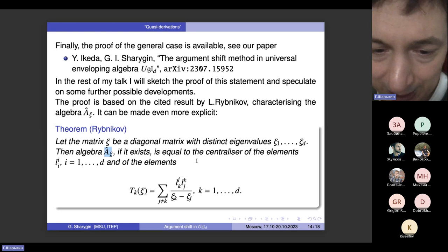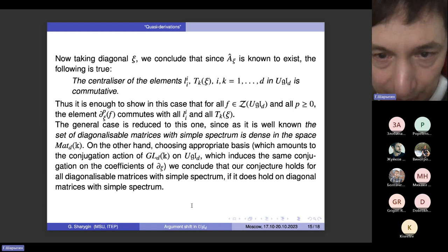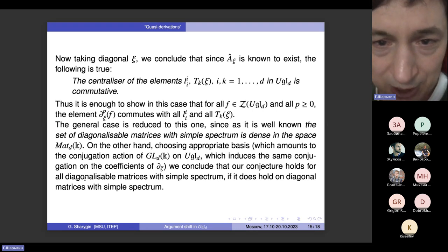The proof is based on the following theorem by Rybnikov, which I already cited, but this time I just give you an explicit formula for the elements which we need to centralize to end up in the algebra A hat sub Xi. So here they are. Well, there should also be L_ii, the diagonal elements of the matrix, but also this T_k of Xi, which are equal to the sum of all j not equal to k of these combinations, these linear combinations of elements in universal enveloping algebra.